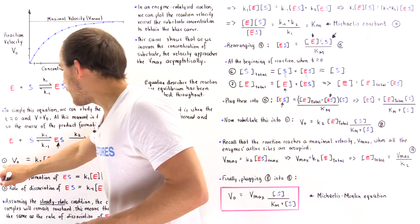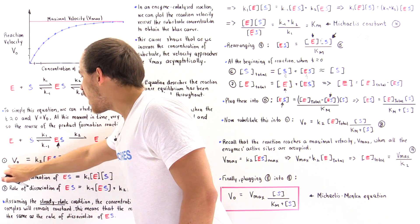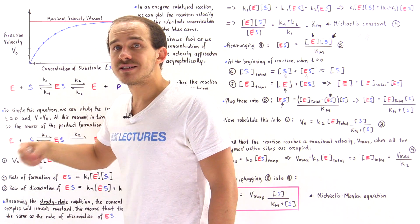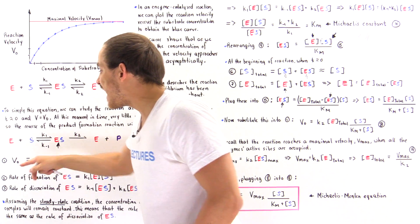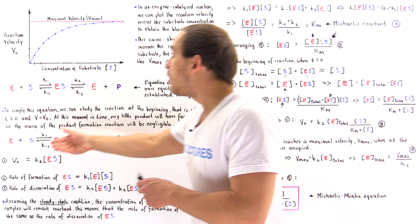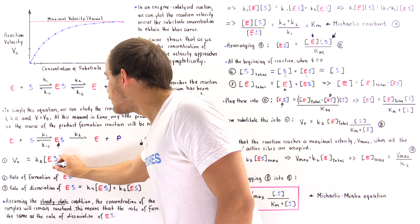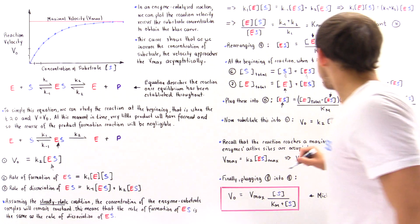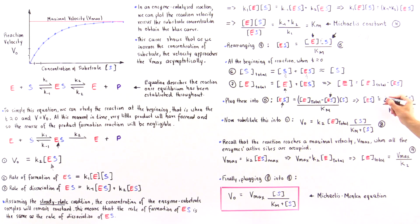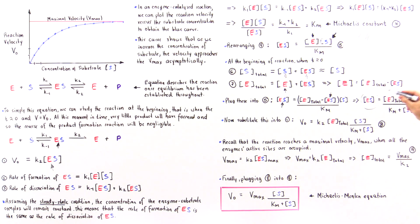So now we take this equation. Remember, let's go back to equation one — this equation describes the V-naught that we actually want to solve for. We want an equation in which the Y value is the V-naught but the X value is the substrate concentration. And that's precisely why we want to replace this quantity. So in this equation we can take this and replace the ES with the right side of this equation. And that's exactly what we get here, and we call this equation eight.